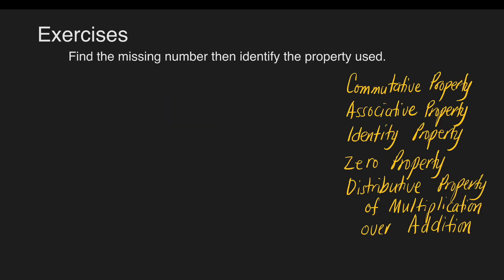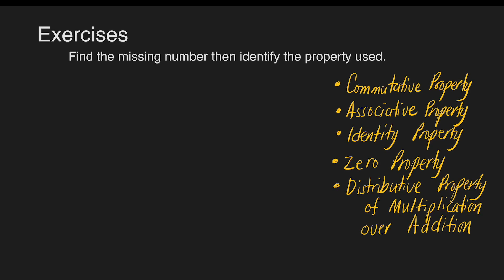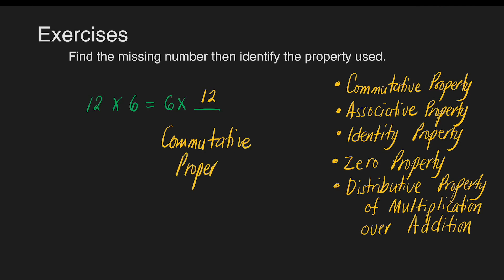Let's have some exercises. Find the missing number, then identify the property used. We'll be choosing from: commutative property, associative property, identity property, zero property, and distributive property of multiplication over addition. For the first question, we have 12 times 6 equals 6 times blank. The answer is 12. The property used is commutative property — the order of the factors does not affect the product.